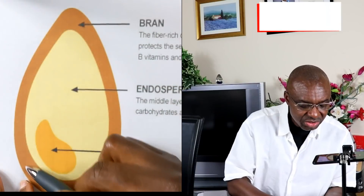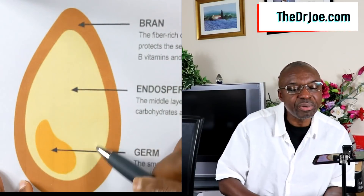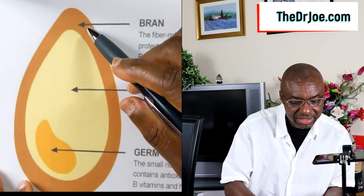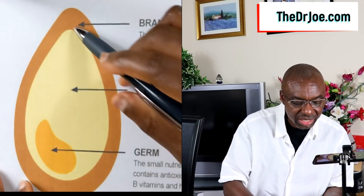The grain has three layers. There is the outer layer called the bran — this outer sheath here. The bran encapsulates the grain, and the fiber that we talk about in grains resides in the bran. The bran also has some trace minerals and some vitamins as well, so the bran is equally nourishing.